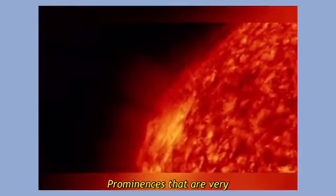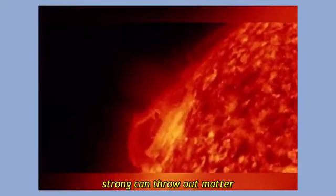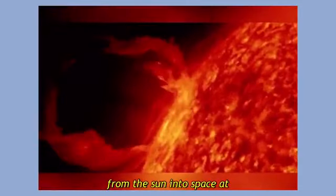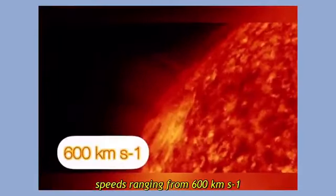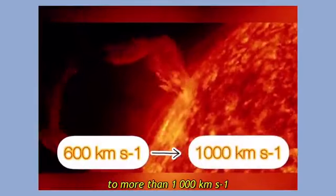A prominence that is very strong can throw out matter from the sun into space at speeds ranging from 600 kilometers to more than a thousand kilometers per second.